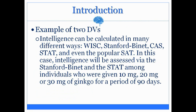Here's another example of an experiment that has two dependent variables. As you read through this, please first determine the independent variable and how many levels it has, then determine the two dependent variables. Intelligence can be calculated in many different ways — through the WISC, the Stanford-Binet, the CAS, the STAT, and even the popular SAT. In this case, intelligence will be assessed via the Stanford-Binet and the STAT among individuals who are given 10 milligrams, 20 milligrams, or 30 milligrams of ginkgo for a period of 90 days. Please pause and determine the IV and the DVs.